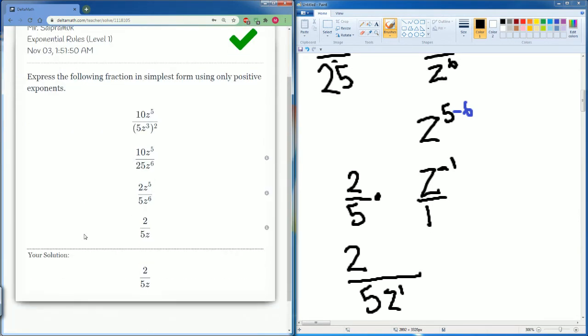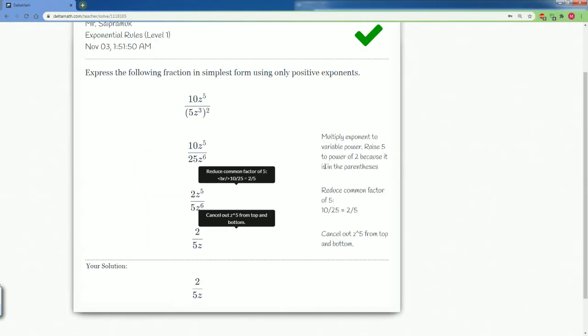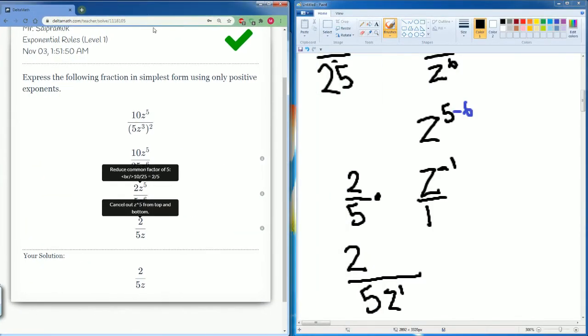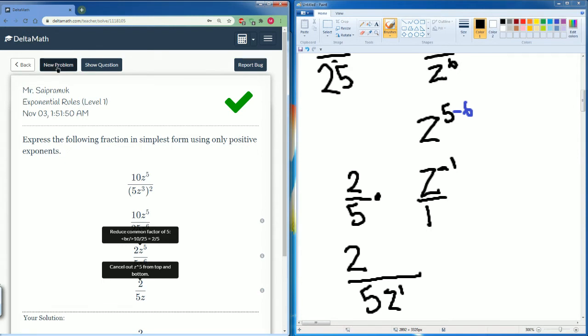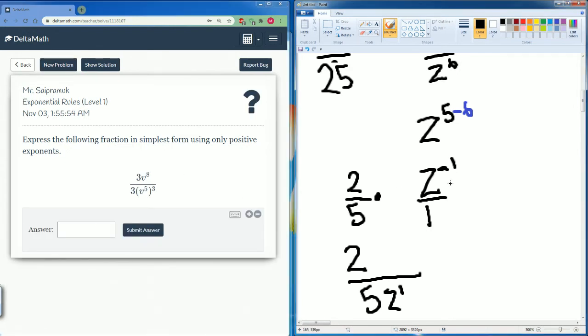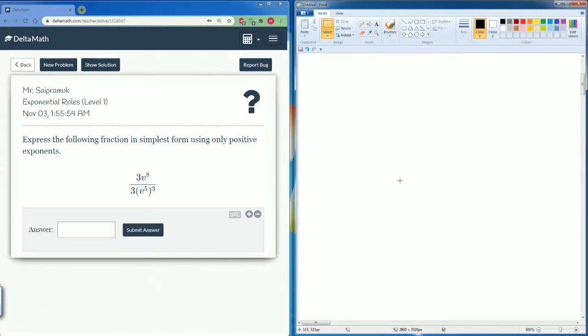Alright there you go. And this gives you details on the steps if you would like. Next problem. We have 3v to the eighth divided by 3v to the fifth to the third.